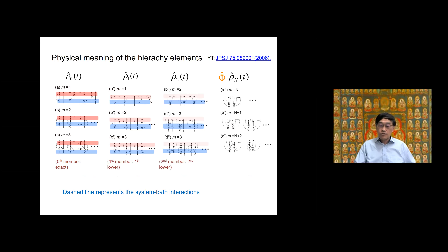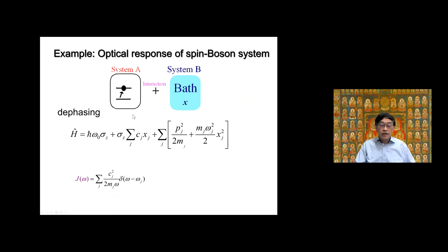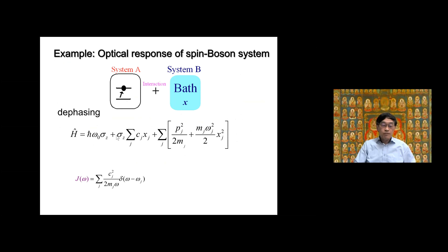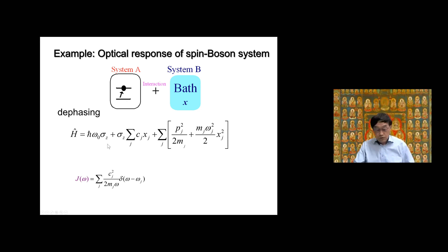We have to use the hierarchical equation of motion to calculate the nonlinear response function. For demonstration purposes, I consider the spin-boson system — a two-level system with a heat bath and system-bath coupling via σ_z, which represents energy fluctuation. If the system-bath interaction and system Hamiltonian commute, the time convolution works very well and we can even obtain an analytical expression for the nonlinear response function in terms of the line shape function. I use this as an example.